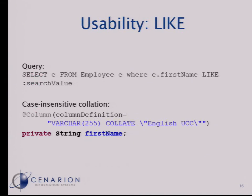To improve usability, there are a few things to consider. You want to use LIKE queries so that when the user enters just the beginning of a name, you find all users whose names start with those letters. You also want to use a case-insensitive collation in your database so it doesn't matter whether the user enters lowercase or uppercase letters. In this example using HyperSQL database, we define the collation as English with uppercase comparison — that's what UCC means. The comparison inside the database is then always done on an uppercase basis, and this is also used in your index.